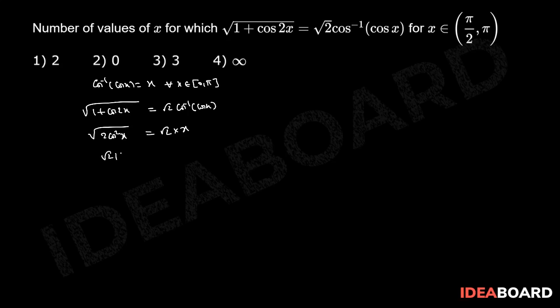Therefore, we have √2 into |cos x| = √2 into x. Root 2 root 2 will be cancelled. Therefore, |cos x| = x.